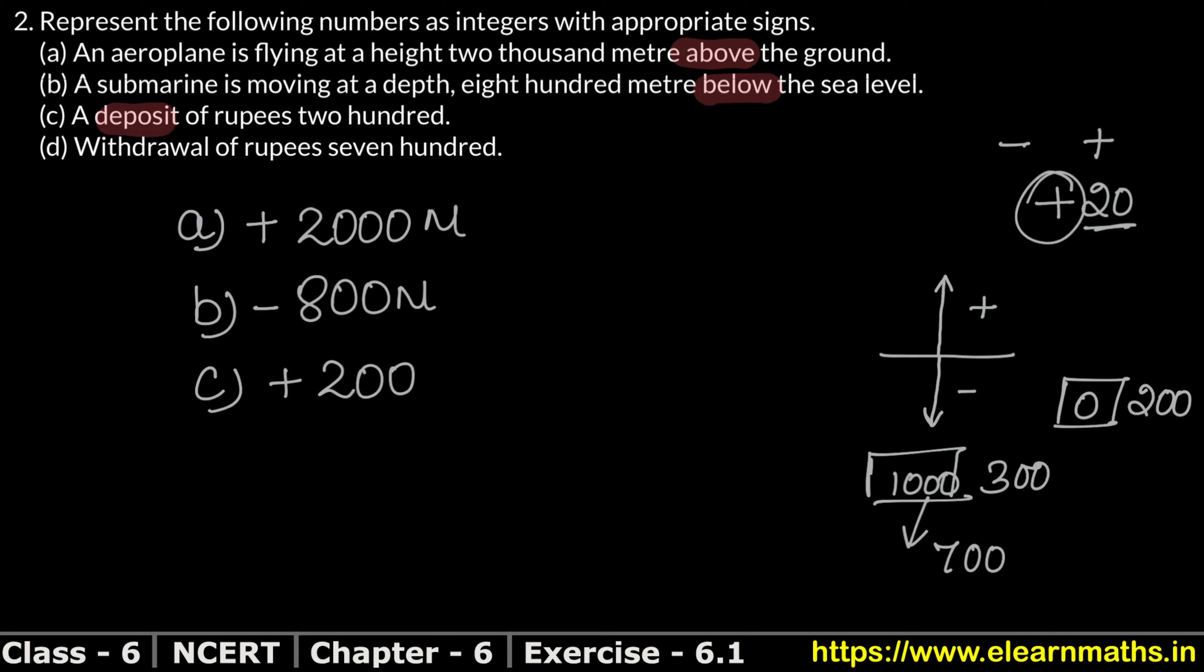So from 1000 to 300, what happened? It decreased. So what does its sign become? It becomes minus. Minus 700 is the answer.